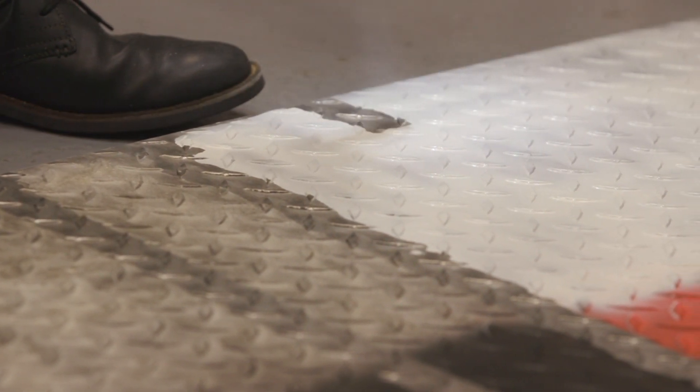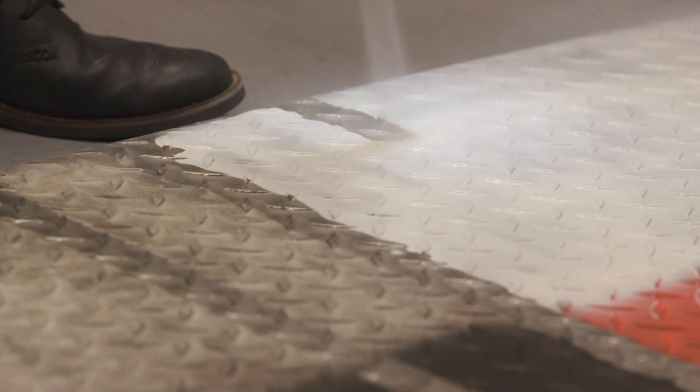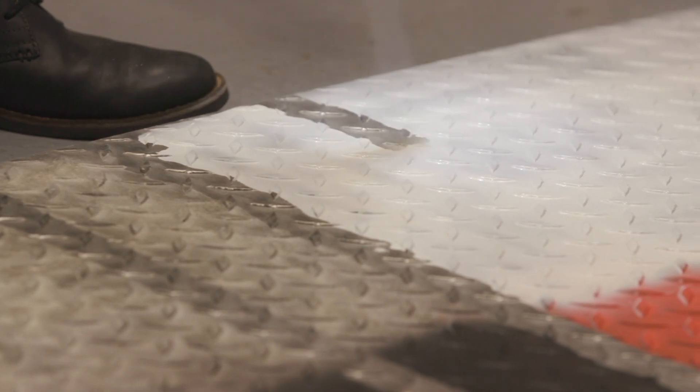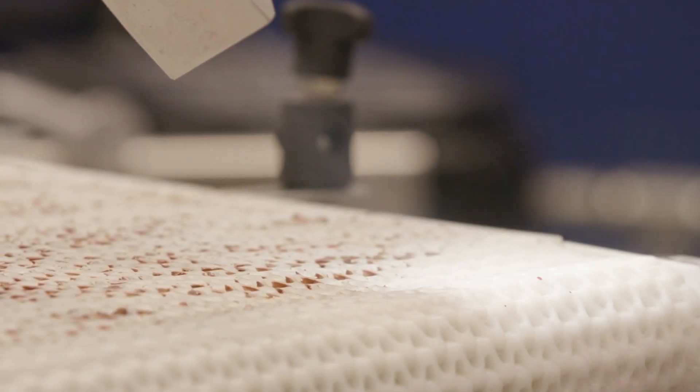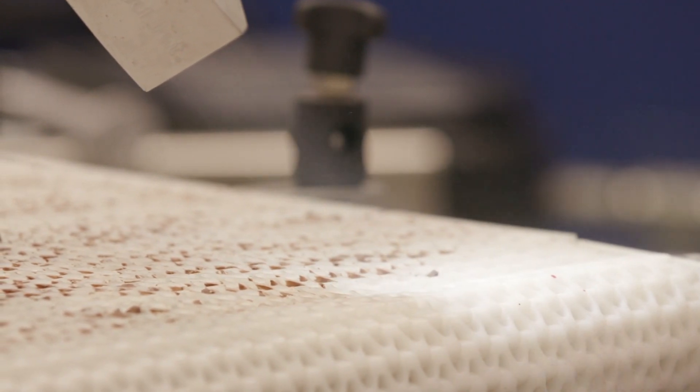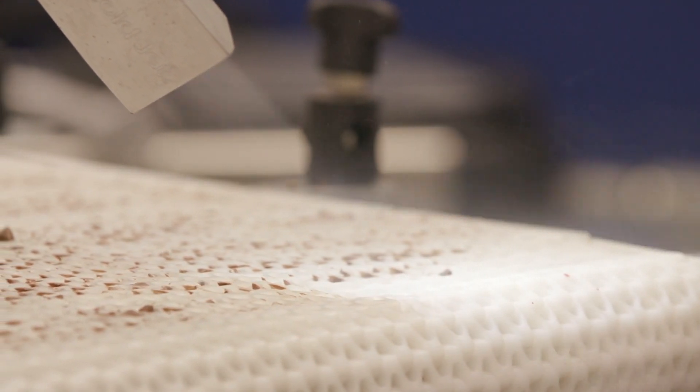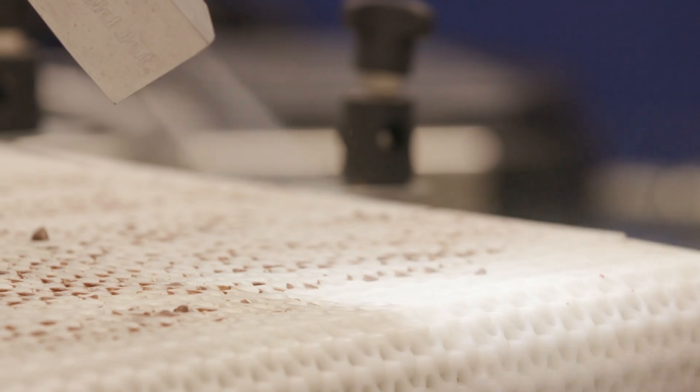Dry ice cleaning is environmentally responsible. Because it disappears on impact, there's no secondary waste. We don't have to rinse. There's no residue. We can replace chemicals or reduce the amount of water used to clean. It's non-toxic and can be used around food. In fact, most dry ice is used to keep food cold.